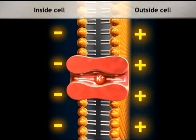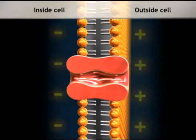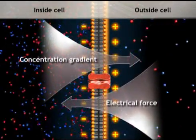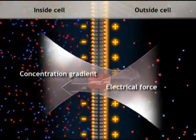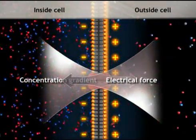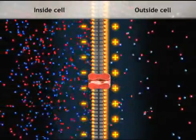Eventually, the electrical force pulling potassium ions into the cell exactly counterbalances the force of diffusion pushing them out. This is the equilibrium potential, where electrical and diffusion forces are equal and opposite, and there is no net movement of potassium ions through the channel, despite the concentration gradient.